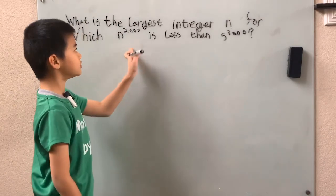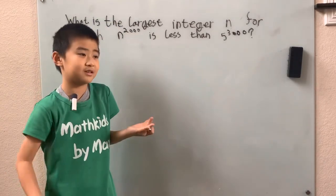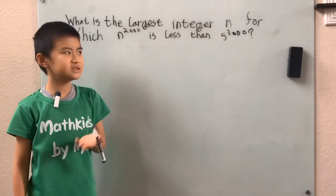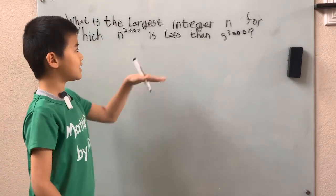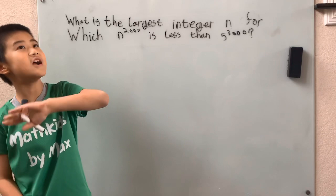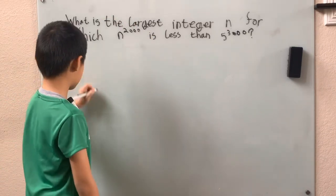So the greatest common factor of 2,000 and 3,000, well you can clearly see that, that's 1,000. So if I take out a factor of 1,000, we're going to use yet another rule, the power of a power rule.